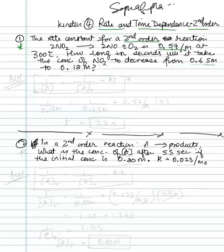K is 0.54 per molar at 300 degrees Celsius. You will see that the temperature is given to you for most cases, but we're not going to use that until we get to the temperature dependence and reaction rates. So right now we're still in time. How long in seconds will it take for the concentration of nitrogen dioxide to decrease from 0.65 to 0.18 molar?